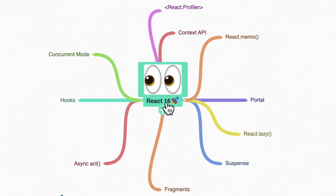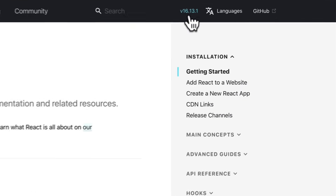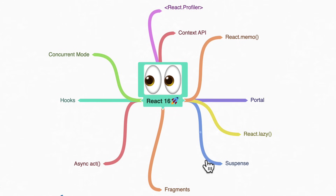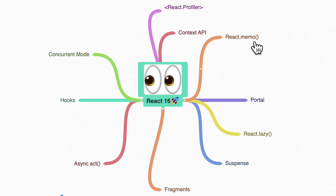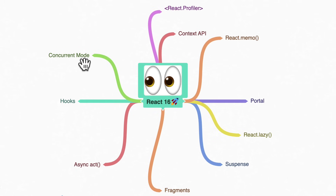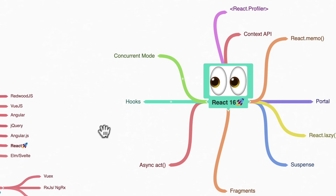React 16 introduced a lot of new features that modern React developers need to know: Profiler for performance checking, Context API, React.memo for memoization, Portal for building modals, React.lazy for performance, Suspense, Fragments, the Async Act for testing, Hooks — which are very popular for building components and managing state in a newer way — and the new concurrent mode for faster React apps. All of these are fairly new features you should be aware of if you're a React developer.